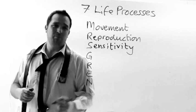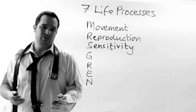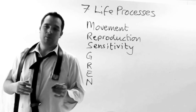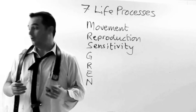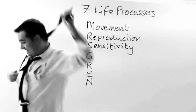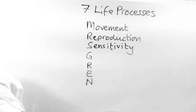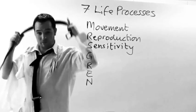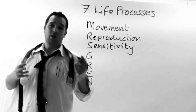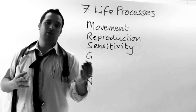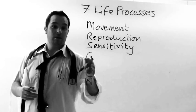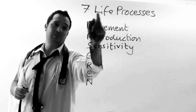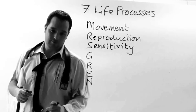The S stands for sensitivity. An organism that's alive may respond to different lights, different temperatures — for example, a lion may not like the cold weather. That's considered being sensitive to the environment, and one of the seven life processes.